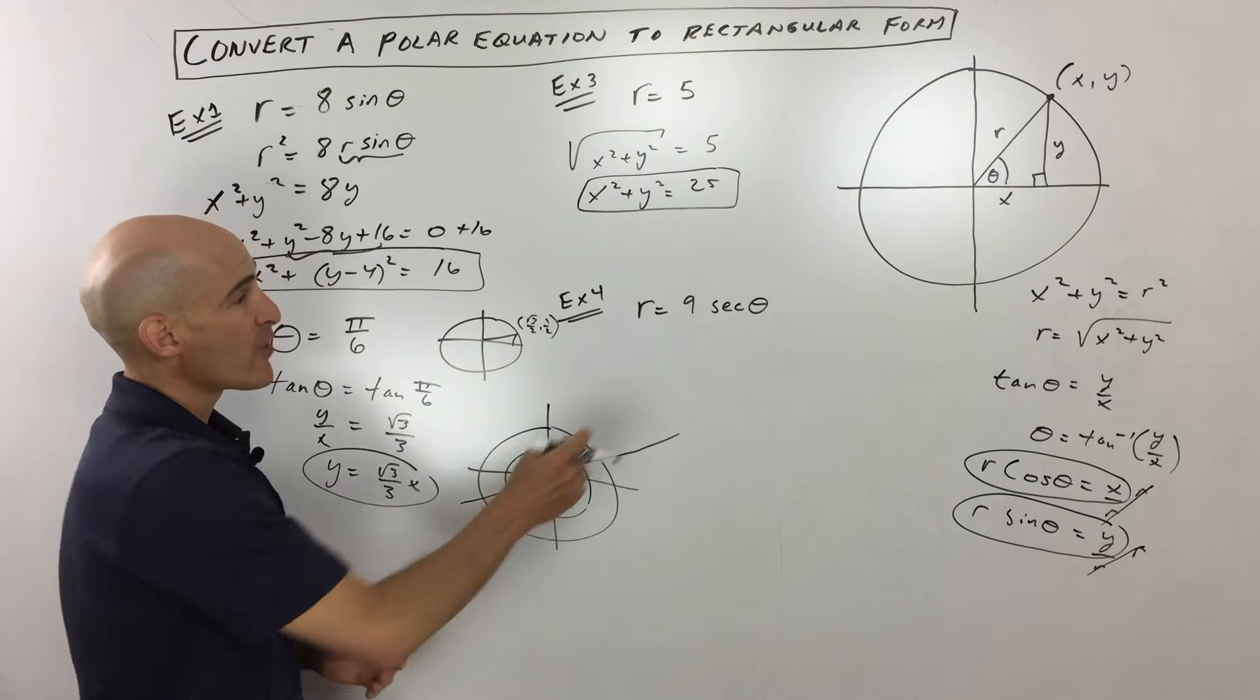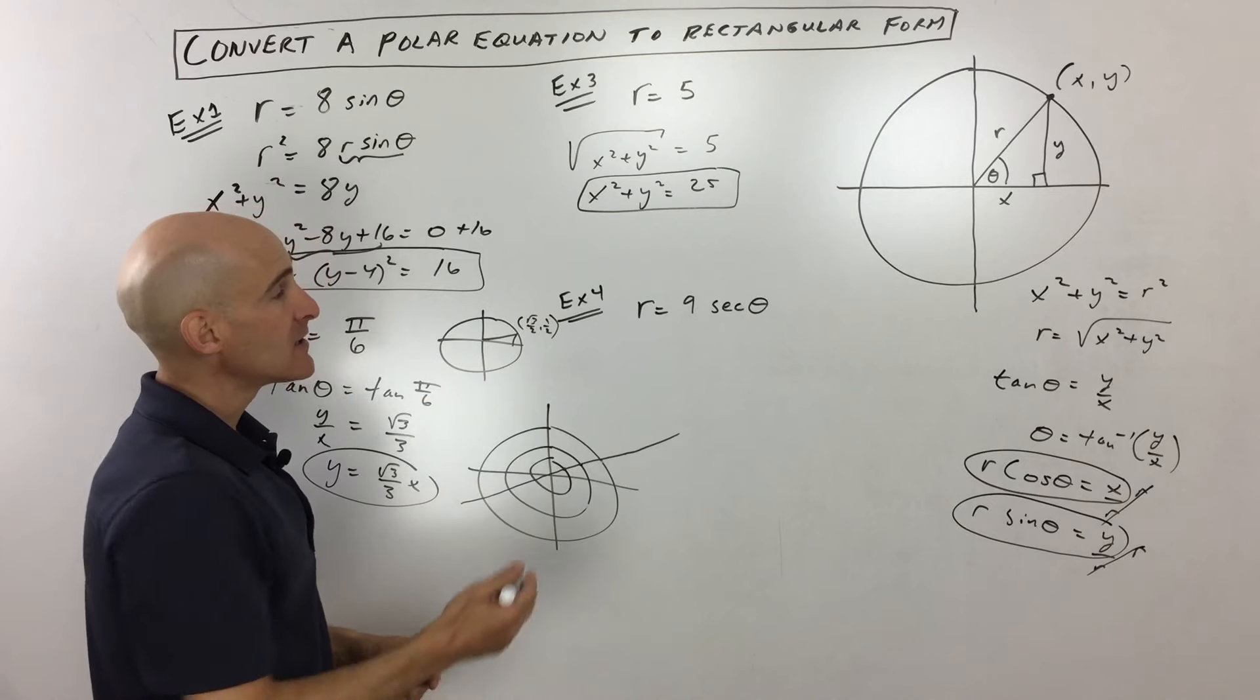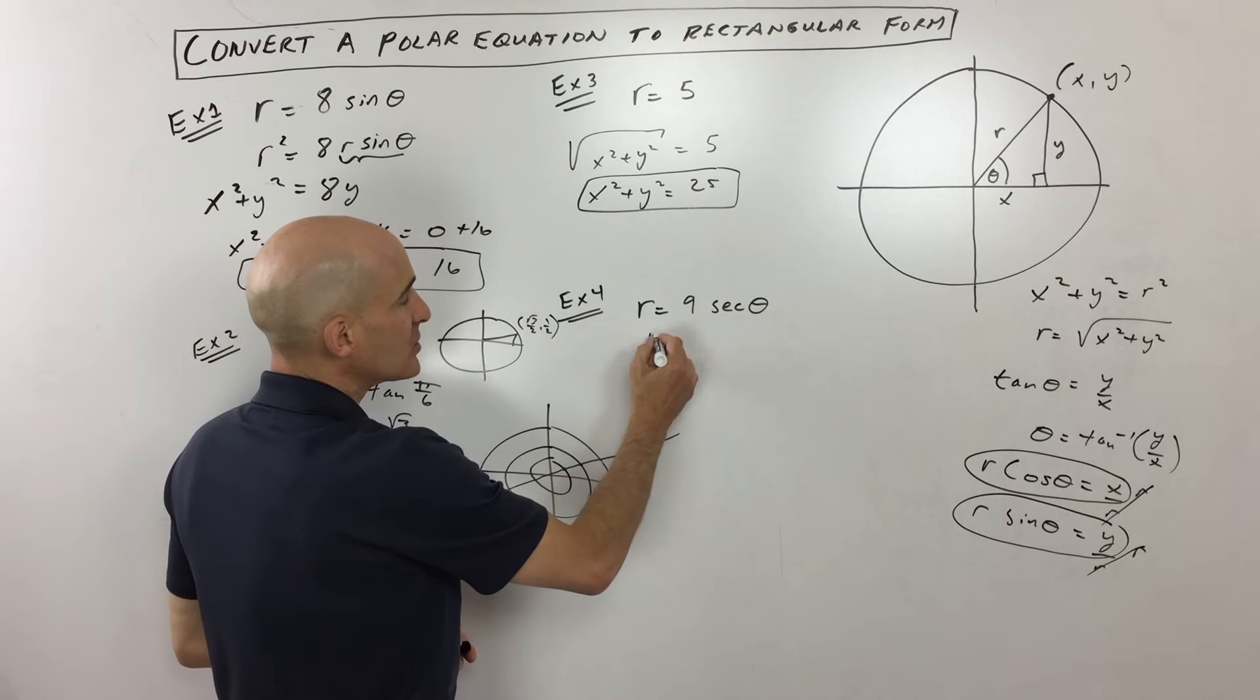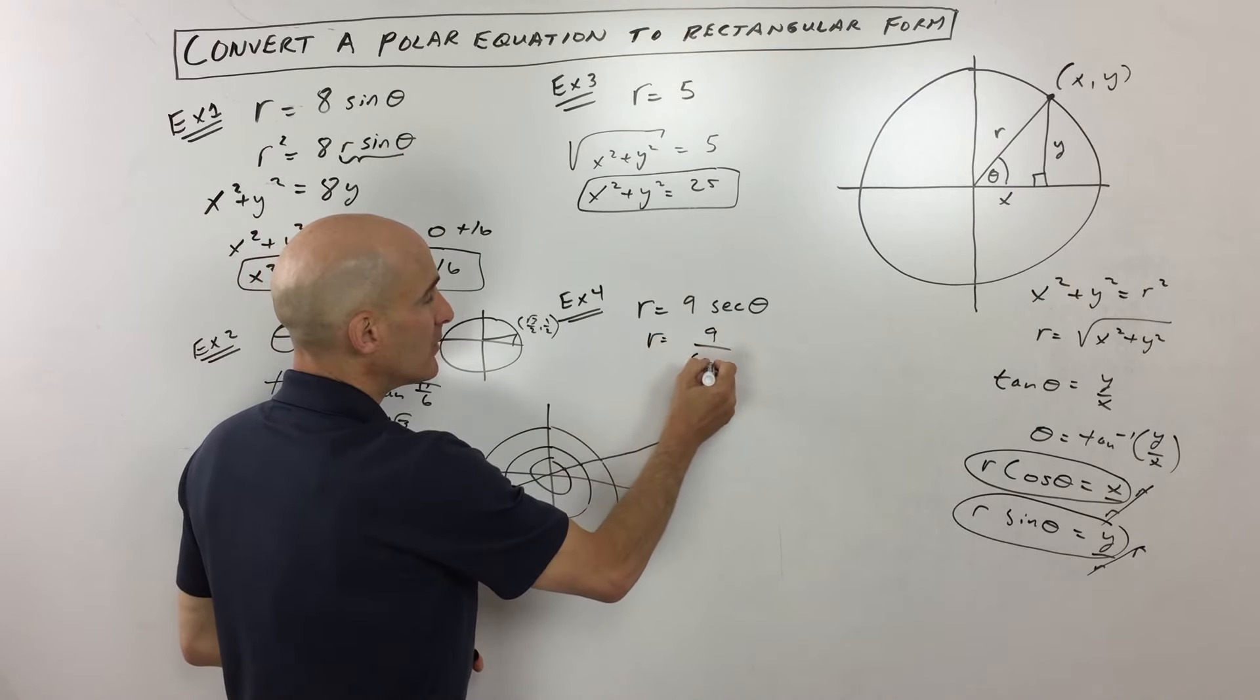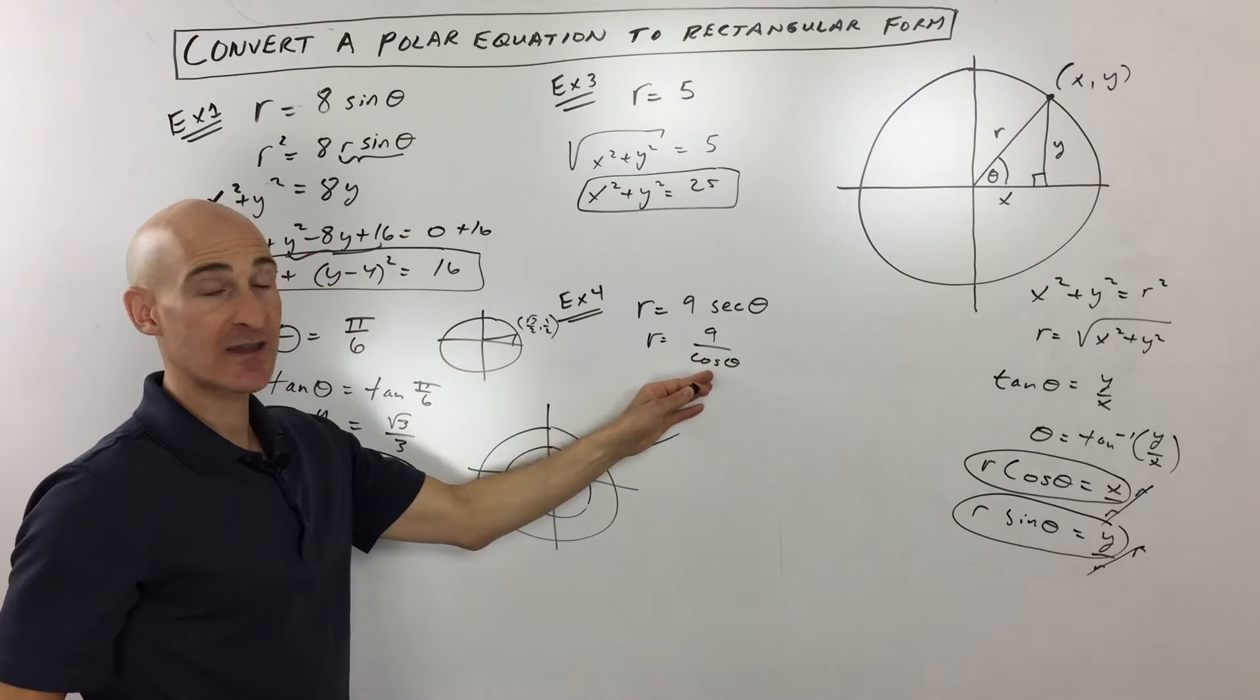Last example. Again, remember our goal is to get rid of the r and theta and just get x's and y's. Secant of theta is actually equal to the reciprocal of cosine. So that's nine over cosine theta.